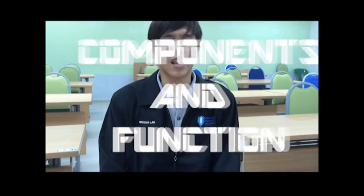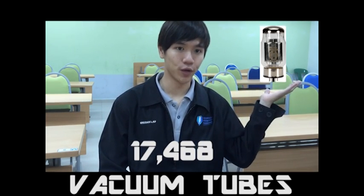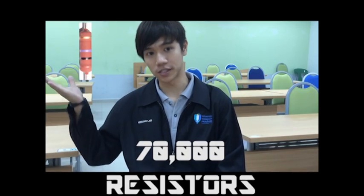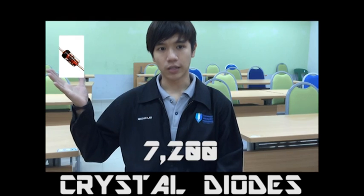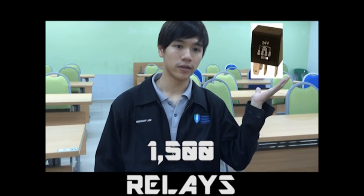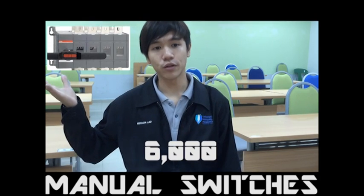Hello guys. Now I will talk about the components of ENIAC. ENIAC consists of many components: 17,468 vacuum tubes, 7,000 resistors, 10,000 capacitors, 7,200 crystal diodes, 1,500 relays, 6,000 manual switches, and lastly, 5 million soldered joints.